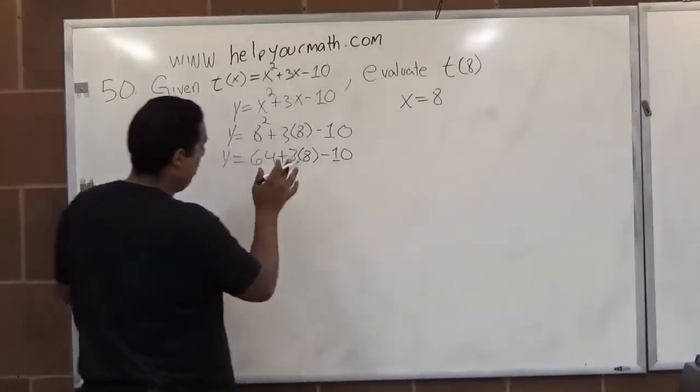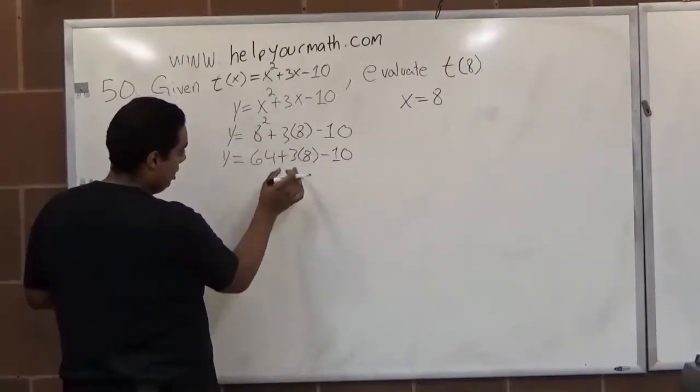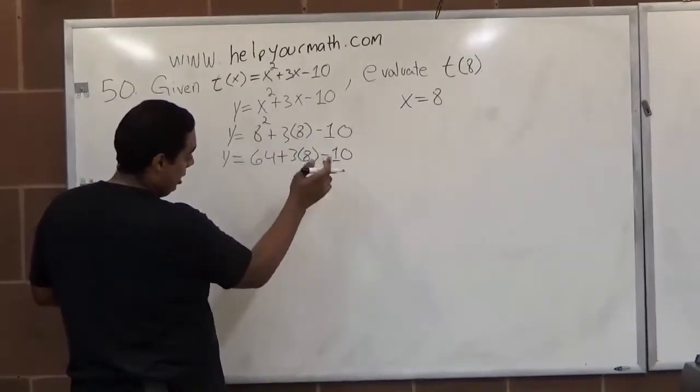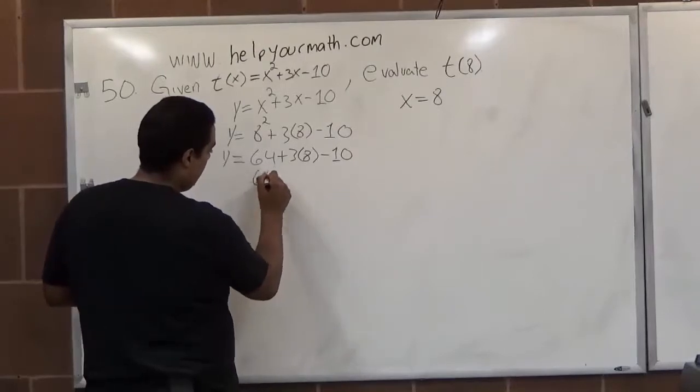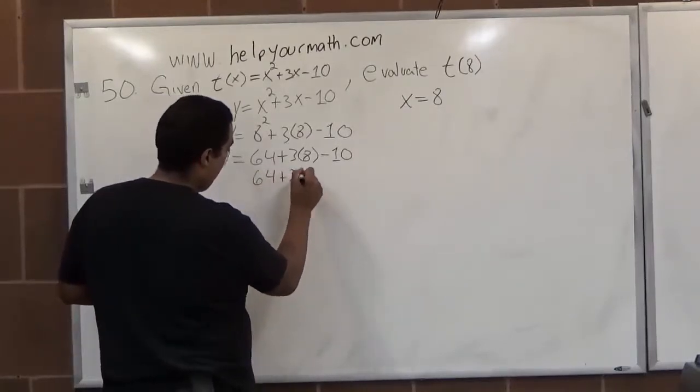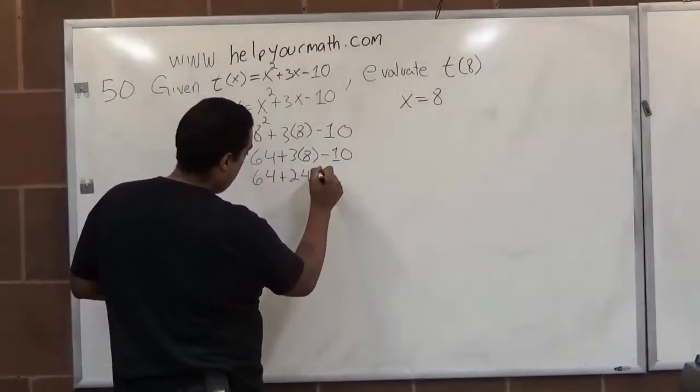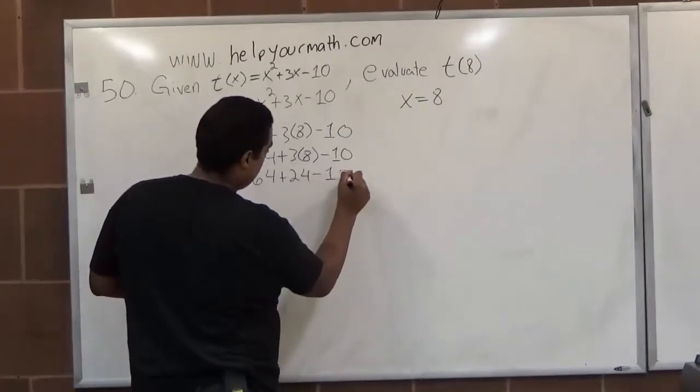After exponents, we go to multiplication. 3 times 8 equals 24, so we have 64 plus 24 minus 10. We just write the rest down.